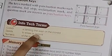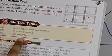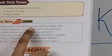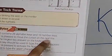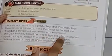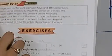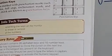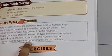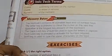Delete means to erase or remove. Numeric means of the numbers. The keyboard contains 26 alphabet keys and 10 number keys. The enter key is pressed to move the cursor to the next line. The space bar is the longest key on the keyboard. The caps lock key should be used to type letters in capital. The num lock key is pressed to activate the numeric keypad. The shift key is used to type the upper characters on the keys.